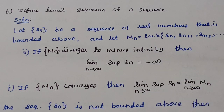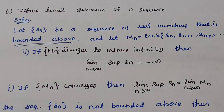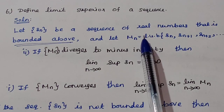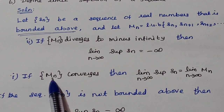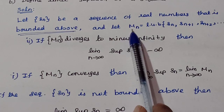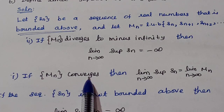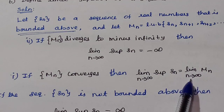Define limit superior. Let (Sₙ) be a sequence of real numbers that is bounded above. Let Mₙ = least upper bound of the set {Sₙ, Sₙ₊₁, …}. If the sequence (Mₙ) converges, then lim sup Sₙ = lim(n→∞) Mₙ.